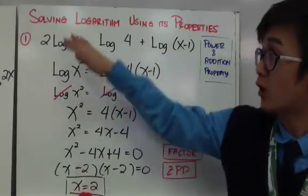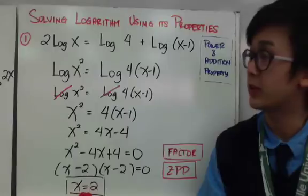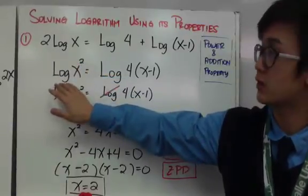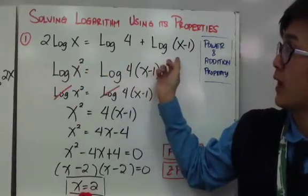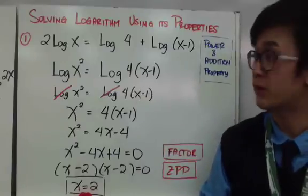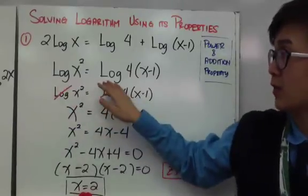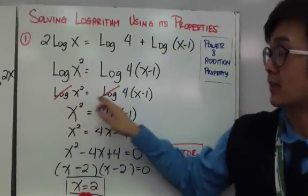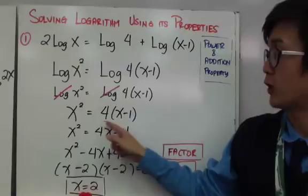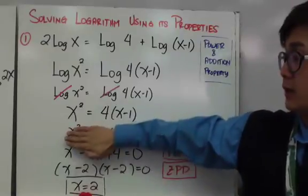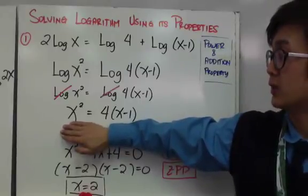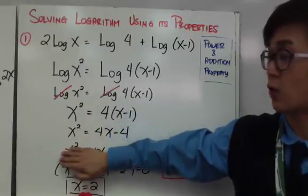Before solving for x, we simplify using the properties of logarithms. For 2 log of x, we use the power property to change it into logarithm of x squared. For logarithm of 4 plus logarithm of x minus 1, we use the addition property to get logarithm of 4 times x minus 1. Since we now have a logarithm on both sides with the same base, we cancel them out and get x squared equal to 4 times x minus 1, which is a quadratic equation.